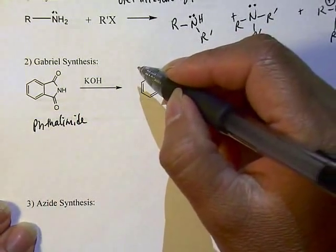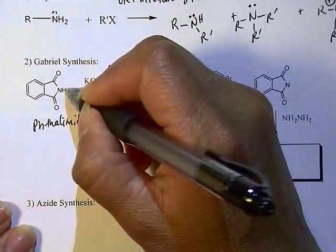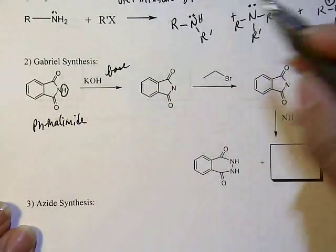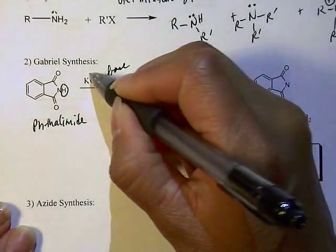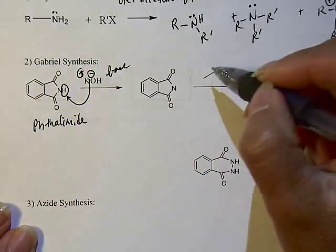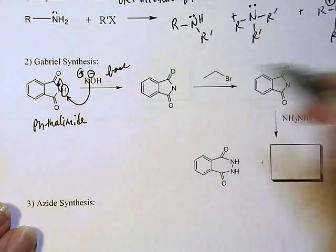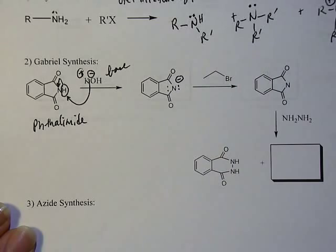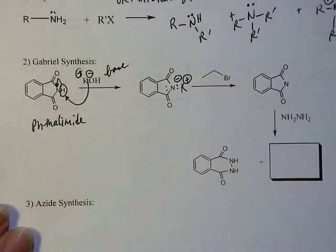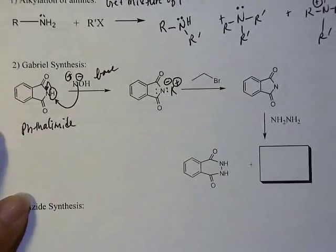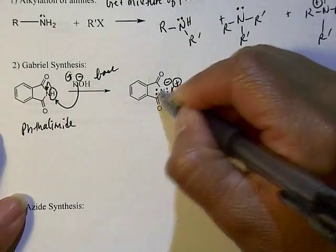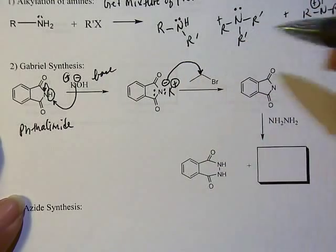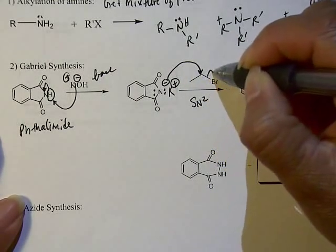You're reacting with a strong base like KOH, and what that's going to do is take this proton, which is the most acidic proton because it's in between the two carbonyls. The base is going to grab the proton, and then the electrons shared between the nitrogen and hydrogen are given to the nitrogen, so the nitrogen now has two lone pairs with the potassium salt as the counter cation. The reason for deprotonation is to make this nitrogen as nucleophilic as possible. This is where the alkylation SN2 reaction occurs.